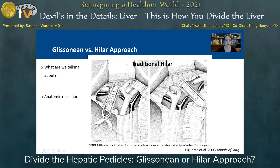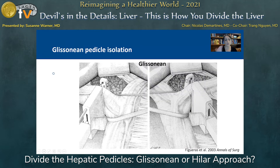When we talk about Glissonian versus Hilar approach for anatomic resections, I think it's important to determine what we are talking about. In terms of traditional Hilar dissection, we're talking about isolating the three structures of the portal triad — your bile duct, your artery, and your portal vein — so that you can then proceed without Pringle for parenchymal transection. When we look at a Glissonian approach, we're usually talking about doing pretty much the same thing on either the right or left side, but instead just taking the structures en bloc without entering the hepatoduodenal ligament, though still taking down in part some of the Hilar plate.